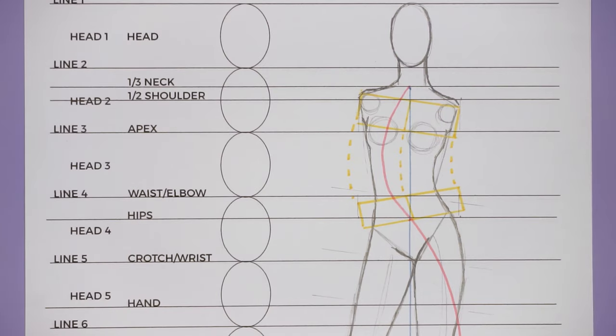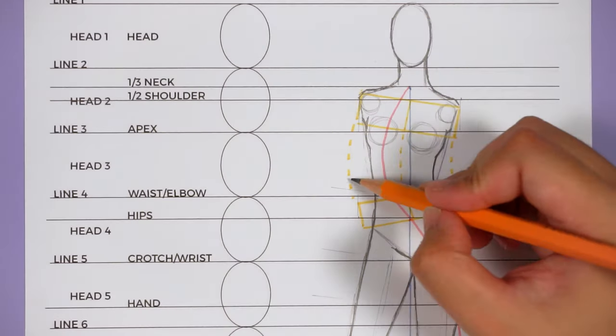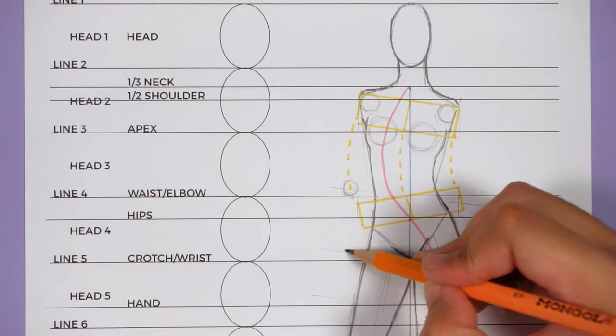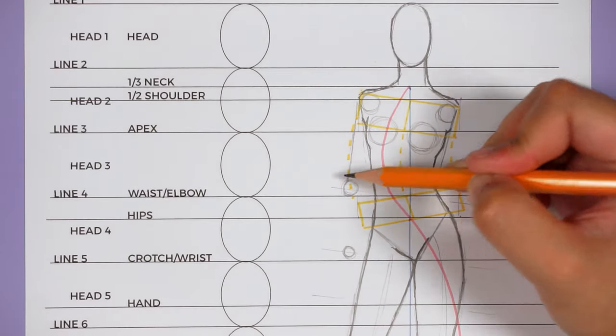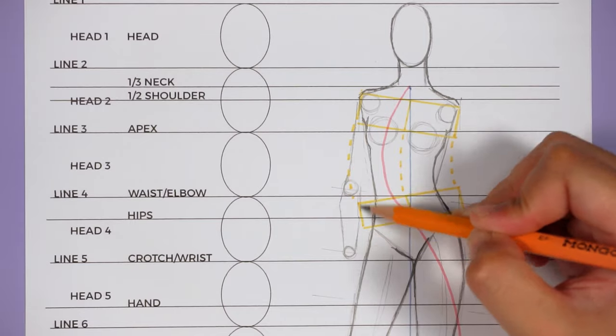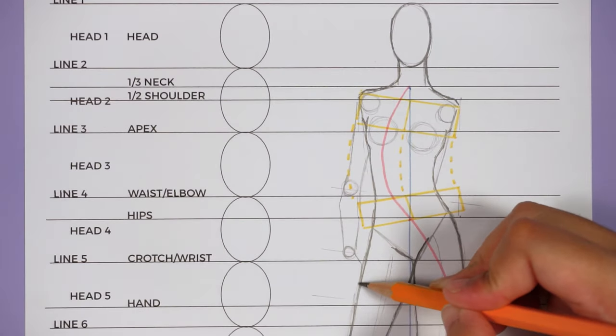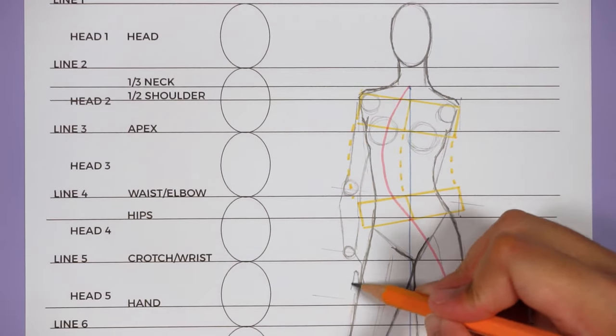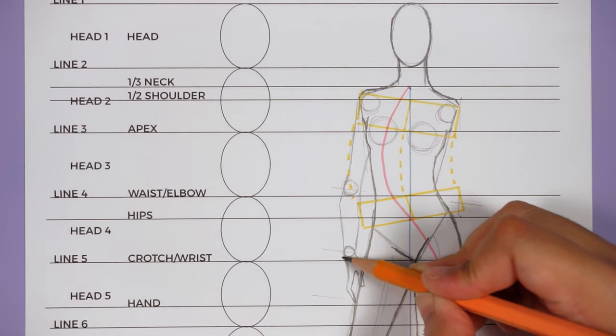So basically I just copy the angle of the shoulder line and rotate the lines for the elbows, the wrists, and the hand. Once that's done, I draw circles for the joints and then I connect them. And once I'm happy with the pose, then I soften the lines and add in the details.